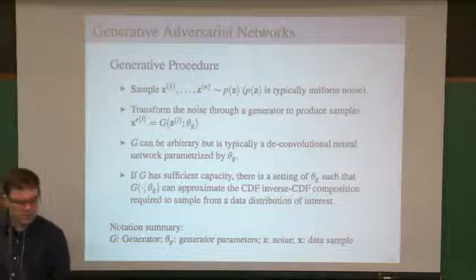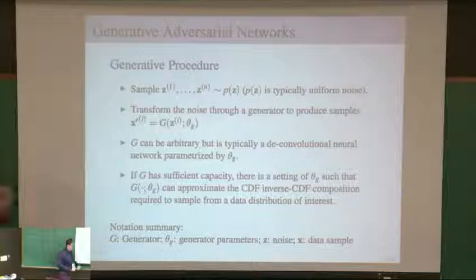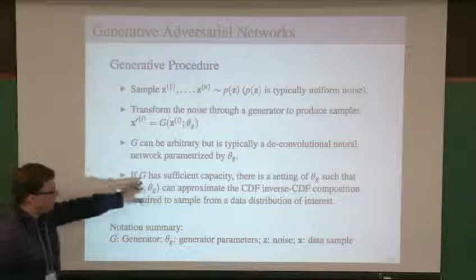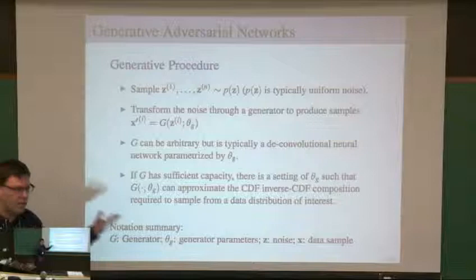So we can think of inverse uniform sampling, where we start with samples from a uniform distribution and pass them through some inverse CDF of interest. Or we can start with variables that have a gamma distribution, pass them through a gamma CDF to make them uniform, and then pass those through some inverse CDF. If the neural network is flexible enough, it should be able to approximate those kinds of compositions to sample from some distribution of interest.